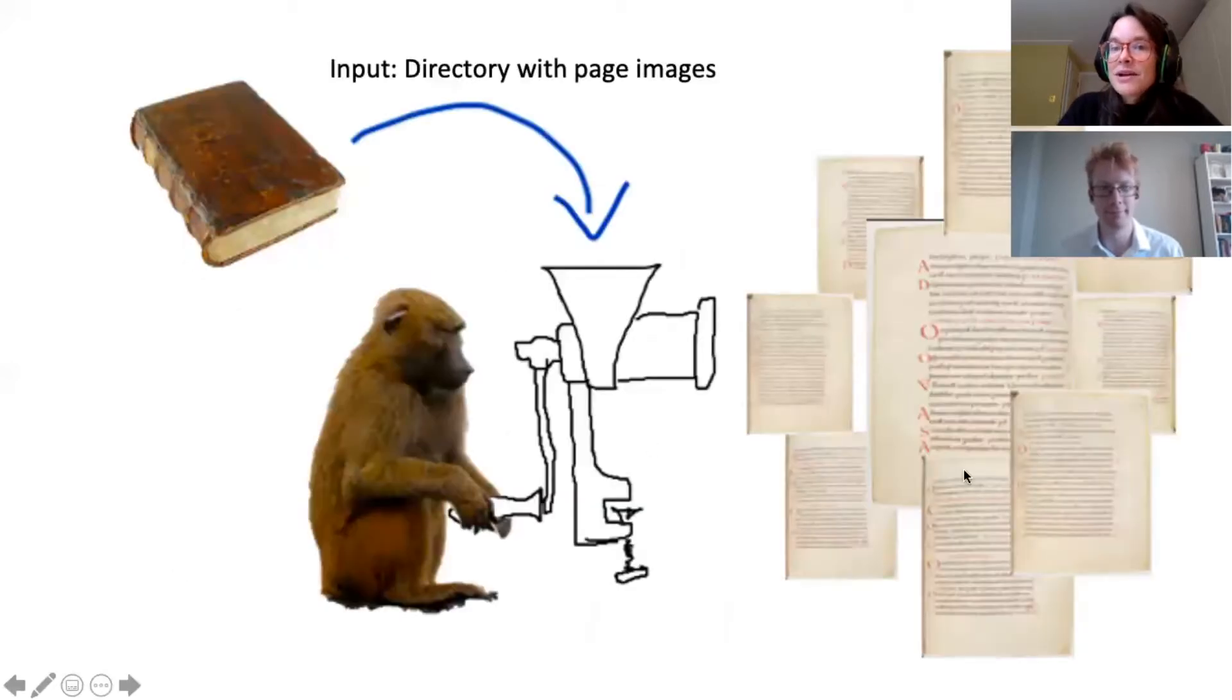Our OCR program consists of three parts that are all integrated into one pipeline. The first one is pre-processing, then comes the actual OCR, and after that post-processing. First, a book directory or a folder with the images of the scanned pages is submitted to the pipeline. Each page is then individually submitted to the pre-processing step.